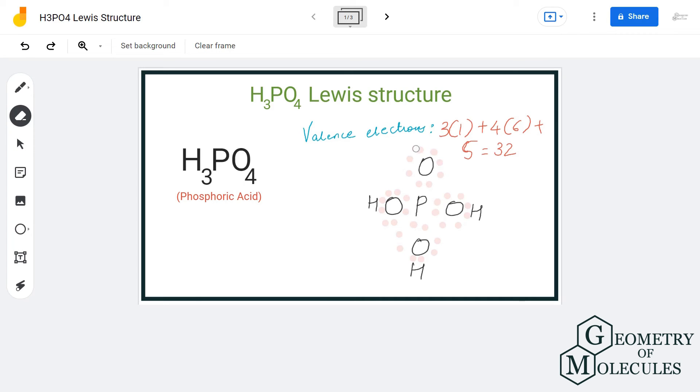As a result, there will be a double bond formed between this oxygen and phosphorus atom.